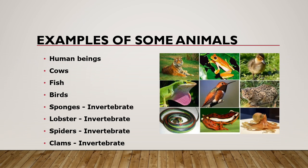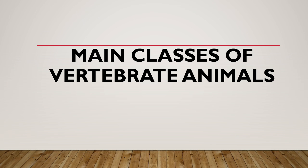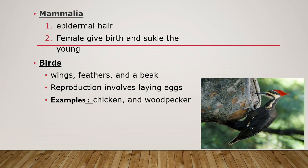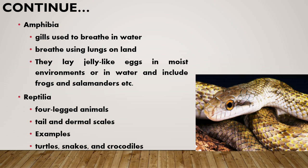Examples of some animals: human beings, cows, fishes, and birds. You can see here in the diagram the main classes of vertebrate animals. Mammals have epidermal hairs present on their body, females give birth and suckle their young.